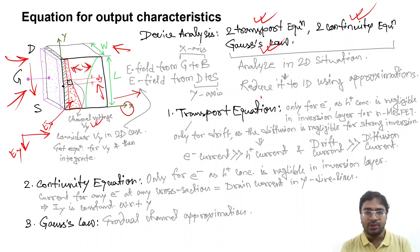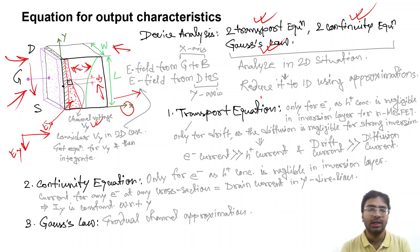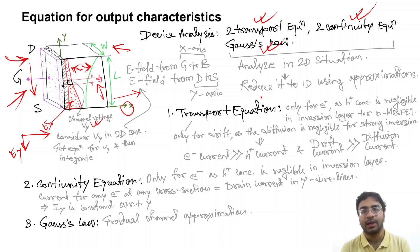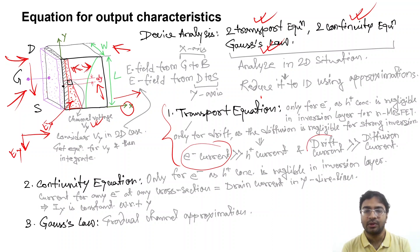Let us start taking the approximations, beginning with the transport equation. When we solve the transport equation, we will only consider electrons and ignore hole concentration, because in the inversion layer the majority carriers are electrons since we have taken an n-channel MOSFET. The hole concentration is very negligible. Secondly, we will only consider drift current, because under strong inversion diffusion is negligible. So we will only consider electron drift current.